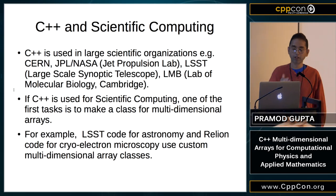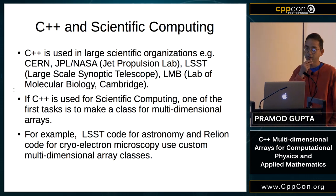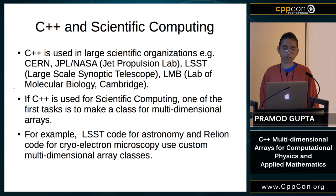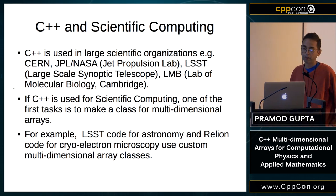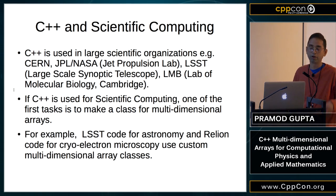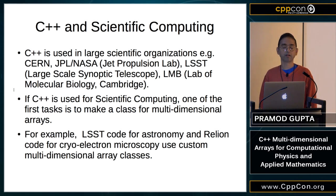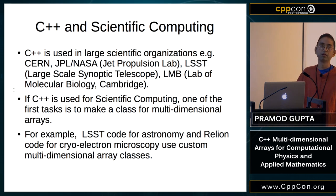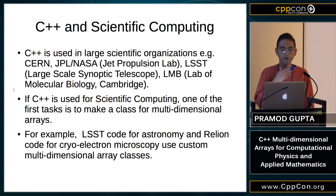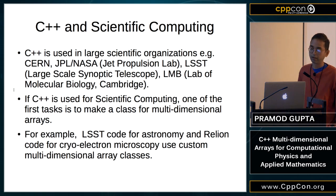This doesn't mean C++ isn't used in scientific computing — in fact it's used in a lot of places. Usually it's very large organizations: Jet Propulsion Lab, LSST (Large Synoptic Survey Telescope), the Lab for Molecular Biology in Cambridge — which is sometimes called the Nobel Prize factory — and so on. These very large organizations tend to use C++.